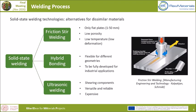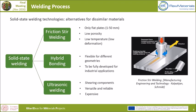We chose solid state welding, and among all the solid state processes, we investigated friction stir welding, hybrid bonding, and ultrasonic welding. Friction stir welding is probably the most common and most used. It involves heat generated by friction. It is suitable and easy to apply to flat plates in a large range of thicknesses. The materials after cooling don't show high porosity, and the temperatures involved in the process are quite small, which means that the residual deformation is not high. Hybrid bonding is a bit more flexible in terms of geometries but is still to be fully developed for industrial applications. Ultrasonic welding is a bit more expensive than the other two processes. We eventually chose friction stir welding as the best option for our project.